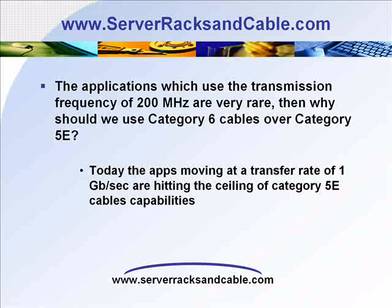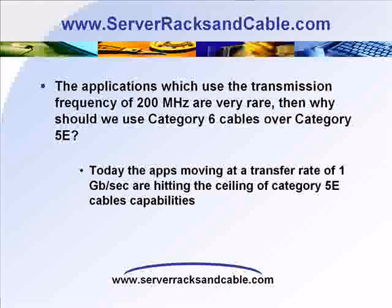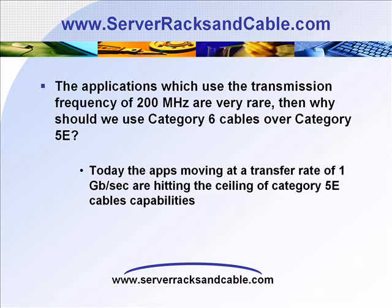The first question is: the applications which use a transmission frequency of 200 MHz are very rare, then why should we use Category 6 cables over Category 5E? Bandwidth and the rate of data transfer are related to each other in the same way as a highway is related to traffic. Increasing the data transfer rate is similar to increasing the quantity of lanes on a thoroughfare to increase the traffic flow. It has been observed that the data rates increase by 100% every 18 months, and due to this there is a need to use new means of transmission with better transfer rates.